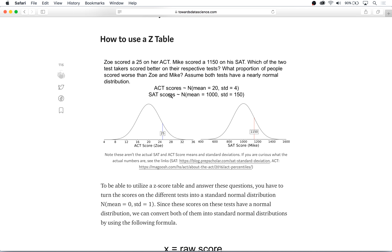So in this example, I'll read it then I'll go through it. Zoe scored a 25 on her ACT, Mike scored an 1150 on his SAT. Which of the two test takers scored better on the respective tests? What proportion of people scored worse than Zoe and Mike? Assume both tests have a nearly normal distribution.